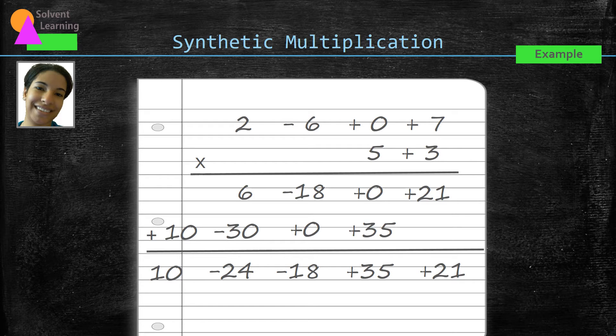So the 21 that we have all the way at the end there, that's our zero degree term. So it doesn't get a variable, it's just a constant, just a number. So when we move to the left to the plus 35, that's going to be our first degree term. So we'll just write an x in.